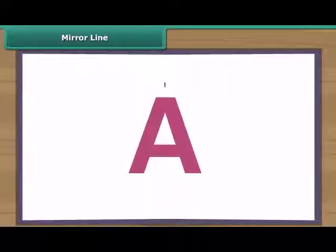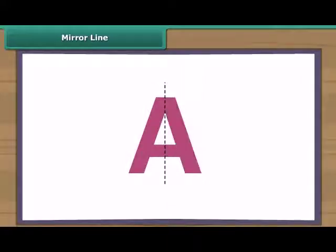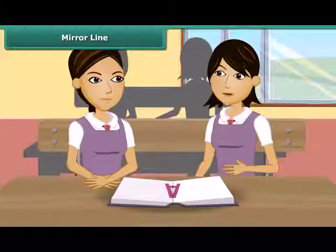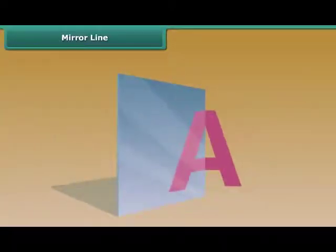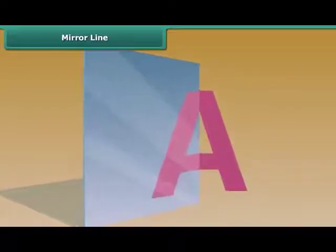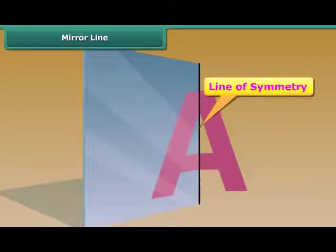A shape has a line of symmetry when one half of it is the mirror image of the other half. Now let's check whether the line drawn on A is the line of symmetry or not. We take its one half and place it in front of a mirror. Its one half is equal to the other half, which means that this is the line of symmetry.